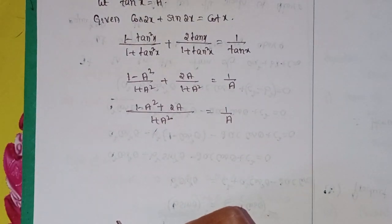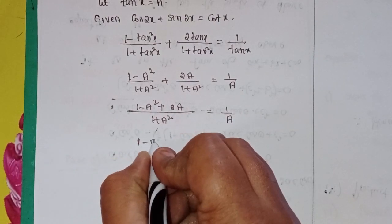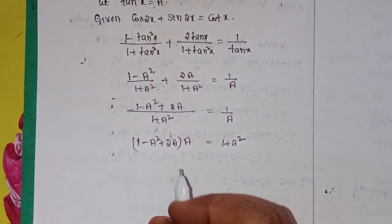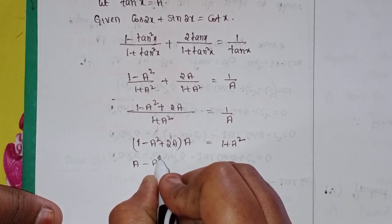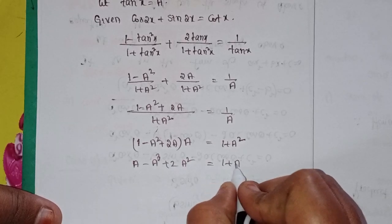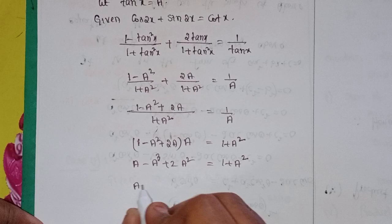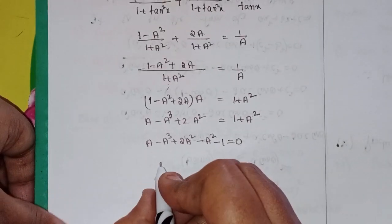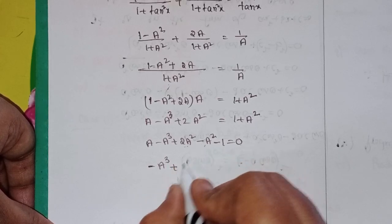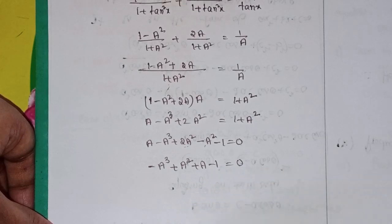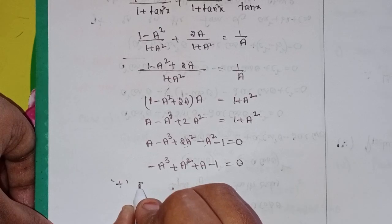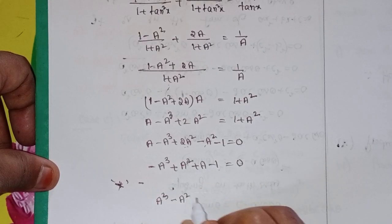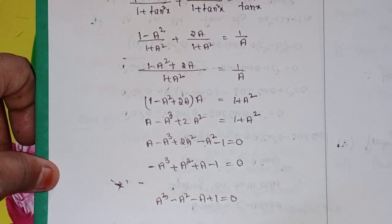Cross multiplying: a minus a³ plus 2a² equals 1 plus a². Rearranging: a minus a³ plus 2a² minus a² minus 1 equal to 0, which gives minus a³ plus a² plus a minus 1 equal to 0. Multiplying by minus 1: a³ minus a² minus a plus 1 equal to 0.